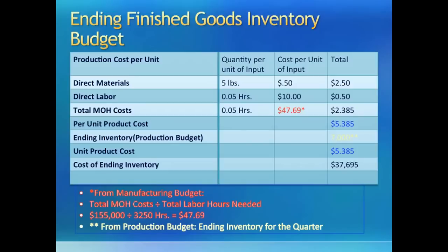Finally, we get to the manufacturing overhead budget and obtain the per unit cost of overheads. We spent a total of $155,000 in our manufacturing overhead budget and used 3,250 direct labor hours in production. Since direct labor hours is our allocation base, we divide $155,000 by total direct labor hours to get a rate of $47.69 per hour. Since each unit requires only 0.05 hour to make, we multiply and get our per unit manufacturing overhead applied to be $2.385.